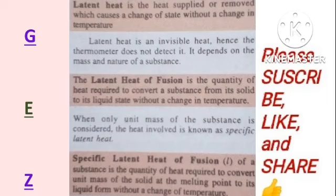Latent heat is an invisible heat — a thermometer does not detect it. It depends on the mass and nature of the substance. One type is latent heat of fusion, which is the quantity of heat required to convert a substance from its solid to its liquid state without a corresponding change in temperature. When dealing with only a unit mass, it is called specific latent heat.